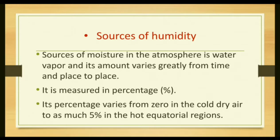Humidity is measured in percentage. Its percentage varies from zero in cold dry air — because cold dry air cannot hold moisture since there is no evaporation — to as much as 5% in the hot equatorial region, where the air is warm and able to capture more moisture. Temperature is the most important factor: if the air is warm and dry it is able to hold more moisture until it reaches the saturation point, where it is no longer able to absorb more water vapor.